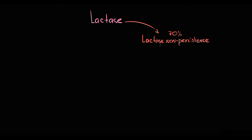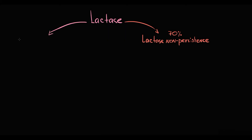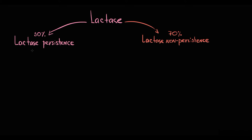Lactase non-persistence affects approximately 70% of the world's adult population. In the other 30% of the population, lactase activity remains high throughout adult life, and such a pattern of lactase expression is called lactase persistence.